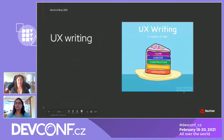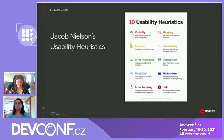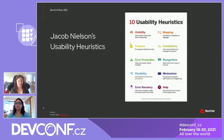Jacob Nielsen is a web usability consultant and a PhD in human-computer interaction. He analyzed 249 systems with usability issues, and based on these analyses, he published an article with 10 general principles for usability interactions. These principles are now used as usability evaluation techniques applied before, during, and after a product release. If these principles are not applied well, users can feel stressed, frustrated, or angry with using your app — which may lead to not using the product, uninstalling it, and certainly not recommending it. Today we will focus on the heuristics directly connected with UX writing.